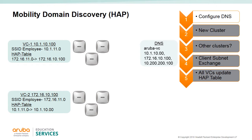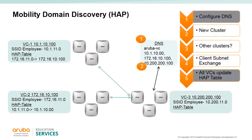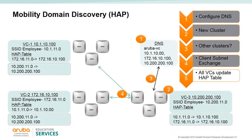The DNS is pre-configured with the IP addresses of all AP clusters. The new cluster VC3 is now in service. VC3 sends a DNS query asking for a resolution of Aruba-VC. The DNS server replies with all the configured VCs in its list. VC3 then communicates with the other VCs and initiates a client subnet exchange. Once the client exchange is done, all of the VCs update their HAP tables with the newly discovered VCs and the client subnets.